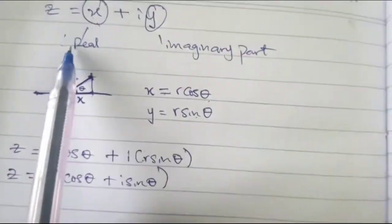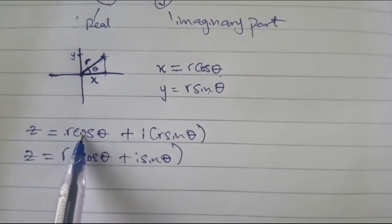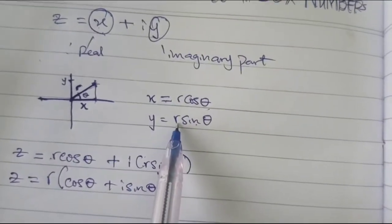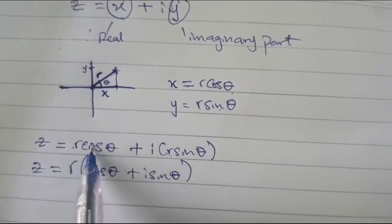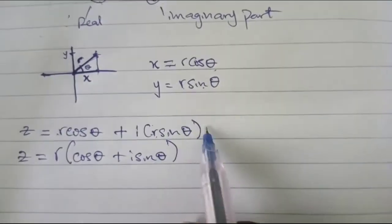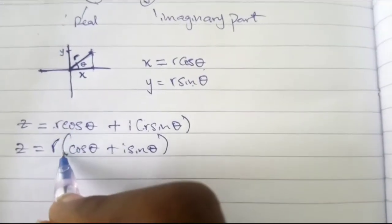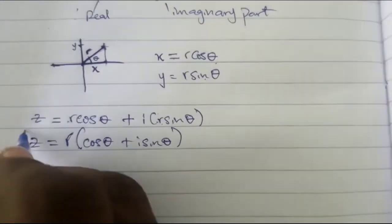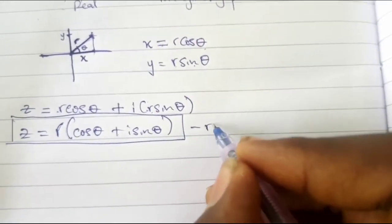Substituting the value of x and our y into this, we have z equal to our x which is r cos theta plus our y which is r sine theta. So that's how we got this. We can factor out r, we'll be left with cos theta plus i sine theta. So this becomes the rectangular form.